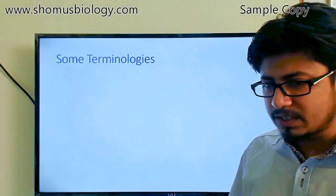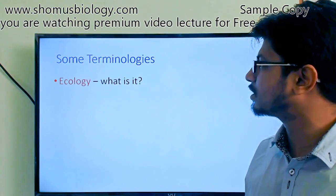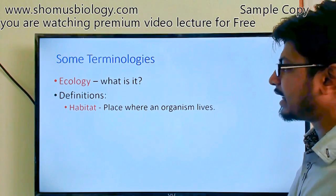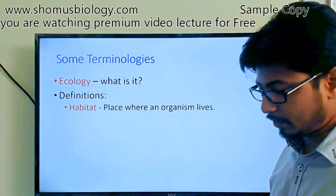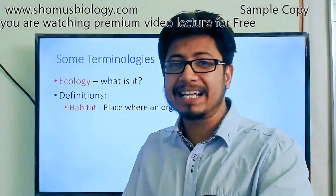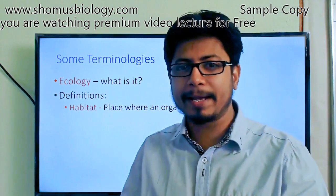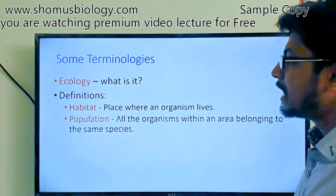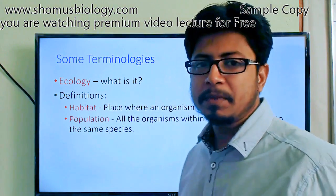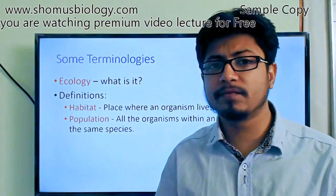When we start talking about the ecosystem, we need to understand some terminologies first. A habitat is a place where an organism lives — a forest is a tiger's habitat, and a tissue can be a micro-habitat for bacteria. A population refers to all organisms within an area belonging to the same species.